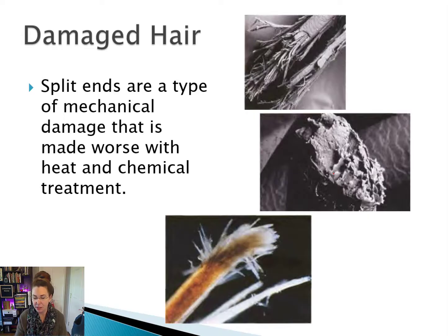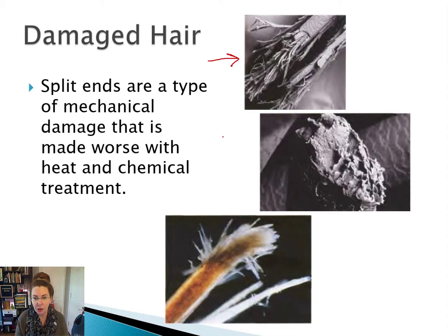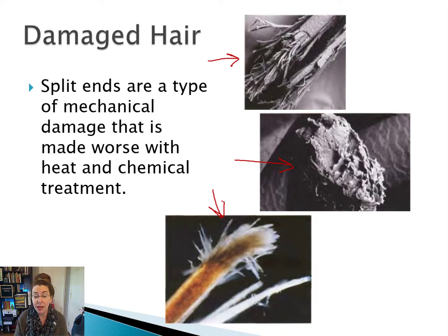Another type of damage we're all familiar with is split ends. But have you ever seen a split end under extreme magnification? It looks horrifying — it's like cables that have sprung out from a tension bridge. These are all views of split ends. Split ends are a classic type of mechanical damage, and they can be made worse by adding heat or chemical treatment to that hair.